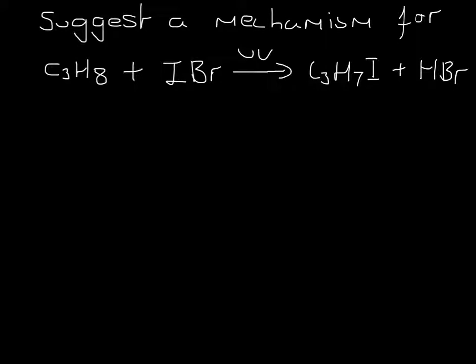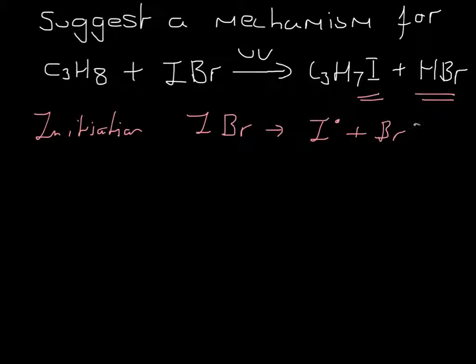So this one is a challenge. So good luck. How do you do this? We need to look really carefully at the products. Notice that the halogen that has gone onto the propane has been iodine and HBr has been formed. So you need to think about how you can do your mechanism. The first one, quite straightforward. We're going to start with initiation, which is fine. That's just going to be my IBr is now going to become I dot plus Br dot. Nothing too scary there.